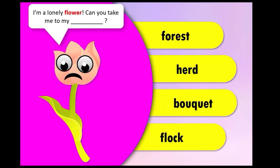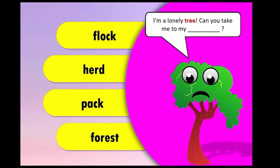Look at this one. I am a lonely flower — can you take me to my forest, herd, bouquet, or flock? What is the correct collective noun for this flower? Yes, you are right — in this one, we have bouquet. Remember this one. Look at the next exercise. I am a lonely tree — can you take me to my flock, herd, pack, or forest? Yes, you are right, guys. In this case, it's forest, because when we have a group of trees, we call this a forest. Good job.